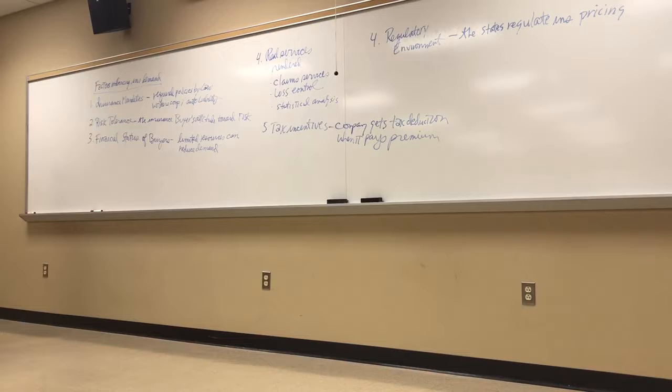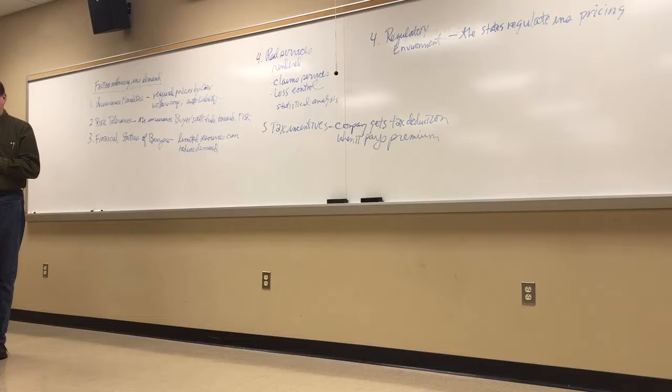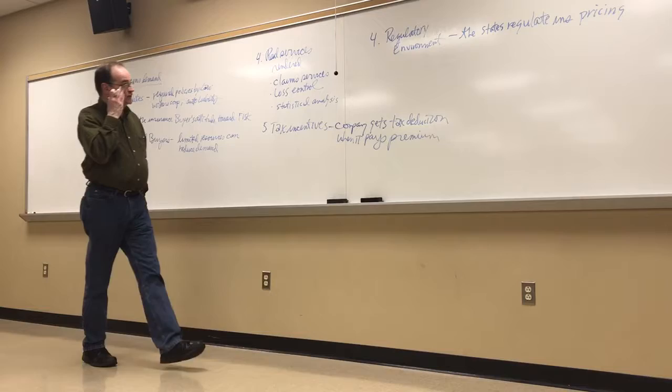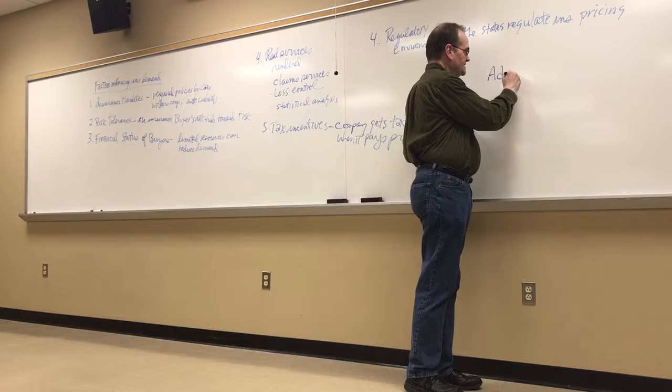So these are sort of our five factors that influence insurance demand on a general level. So we talked about four factors that influence supply, and now these are five factors that influence demand. Sort of looking at the economics of insurance. One of the factors that comes into play with insurance, and we've talked about it before, is adverse selection. Can anybody tell me what that means?